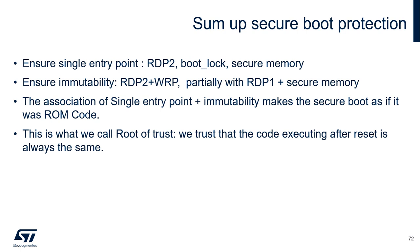Summary of the secure boot protection: in order to trust the secure boot code, two conditions must be met. First, ensure the single boot entry — on STM32, this can be achieved by RDP level 2, boot lock, and secure memory on H7, for instance. Second, ensure immutability, achieved by RDP level 2 plus WRP, and partially with RDP 1 and secure memory. The association of single boot entry and immutability makes the secure boot code as if it were ROM code — this is what we call root of trust: we trust that the code executed after reset is always the same.